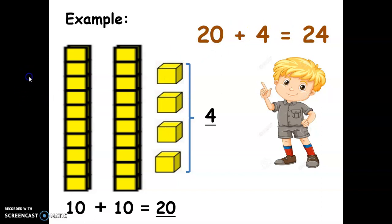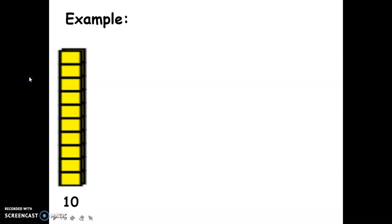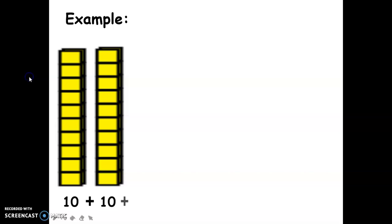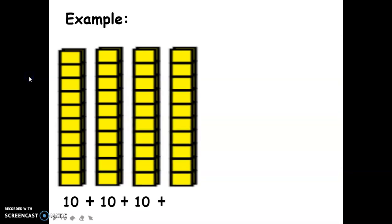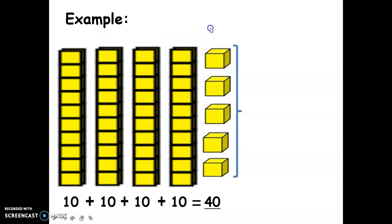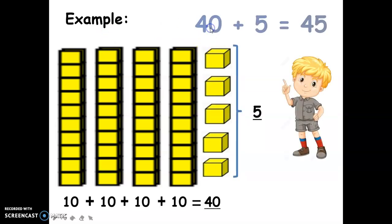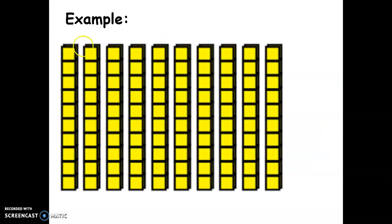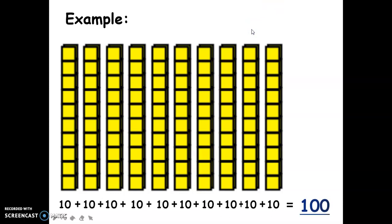Next example: ten plus ten plus ten plus another ten equals forty. Now we add five units — forty plus five equals forty-five. And this is quite many blocks, but they are just ten longs that, when put together, make one hundred. So ten longs equals one hundred blocks.